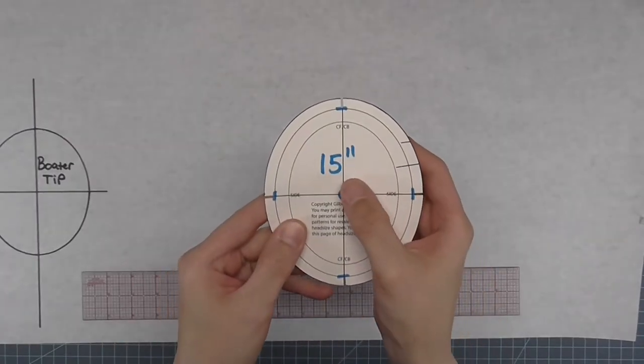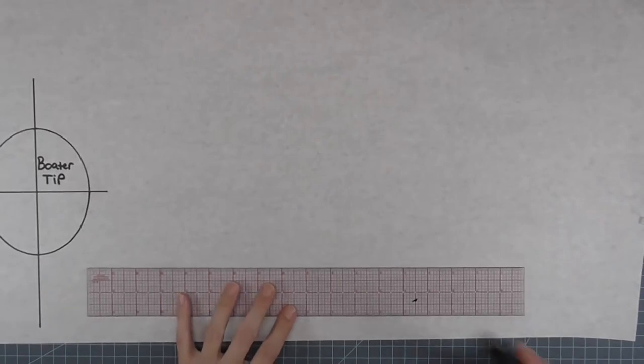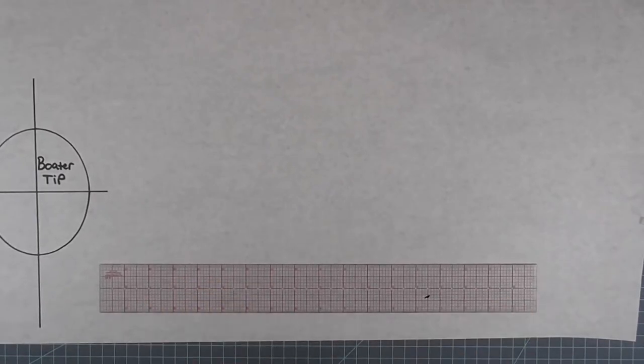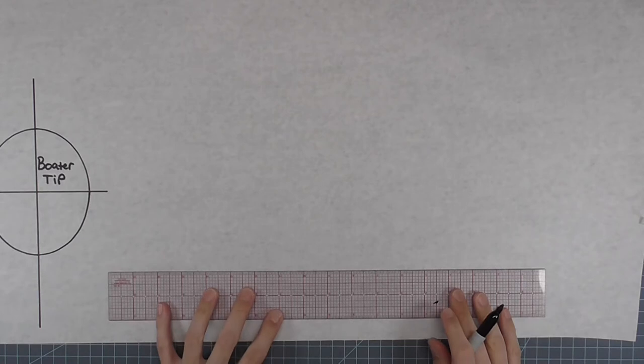Since my head size plus ease is fifteen inches, I'm going to draft a crown that is fifteen inches long. Start with a straight line that is a little bit longer than you need.